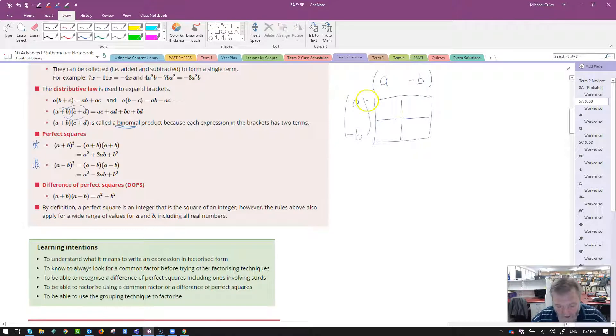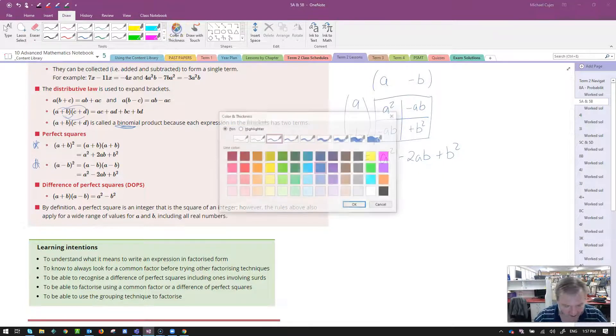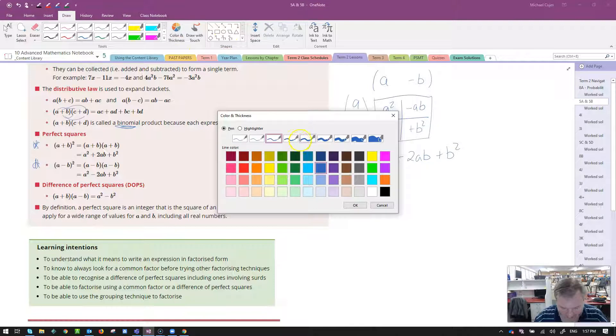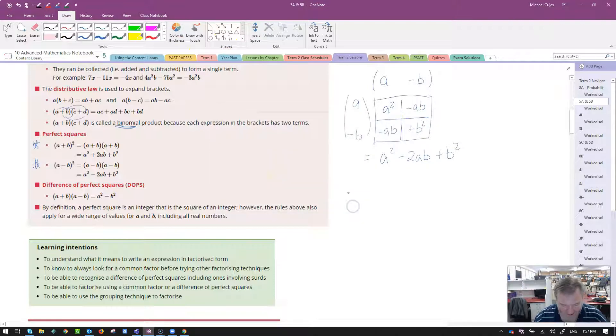Let's just double check and see how we could expand that. A times a will give me a squared. A times negative b is negative ab. Negative b times a, that's negative ab. And negative b times negative b, that's a positive b squared. So inside the grid there, we have our solution: a squared minus ab minus another ab, that's minus 2ab, and then we've got b squared at the end. So easy enough to follow there.